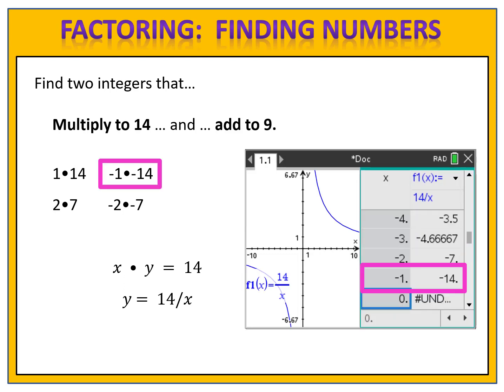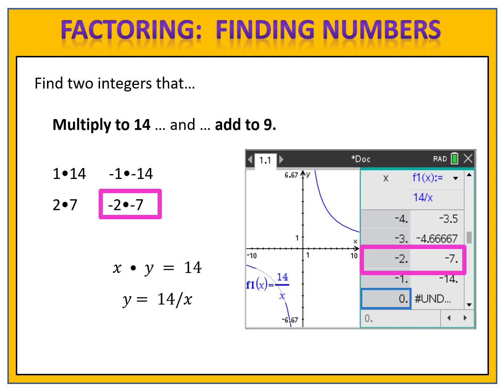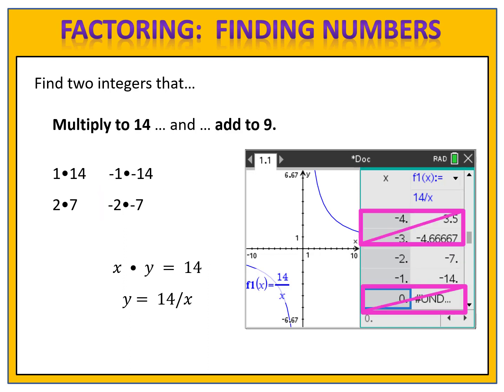If I scroll up in the list, I'll notice there are some negatives as well: negative 1 times negative 14, negative 2 times negative 7. Anything that does not involve integers I'm not interested in. So I can always find my integers by looking in the graphing calculator — putting in the number divided by x, in this case 14 divided by x, and then scrolling up and down the table.